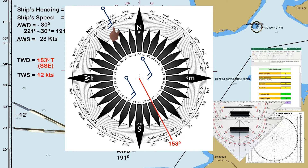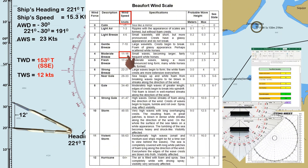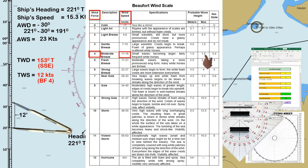Next, let us determine the wind force using the Beaufort wind scale. Our true wind speed is 12 knots. Checking the scale, the wind speed is between 11 to 16 knots and the Beaufort force is 4. The description is moderate breeze, and the sea state is 3 to 4 where the sea is forming small waves becoming larger.